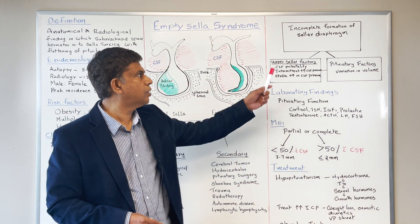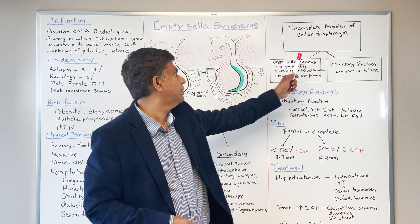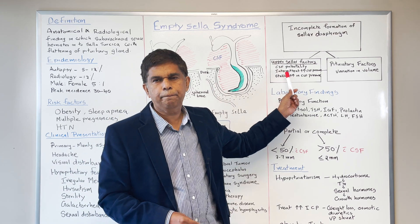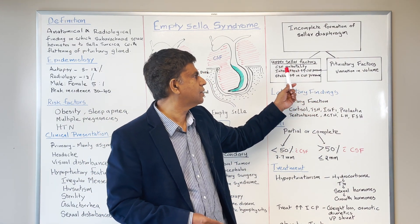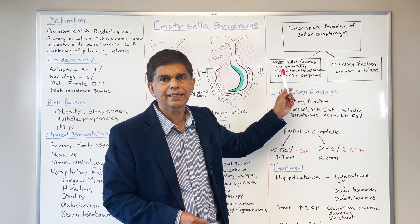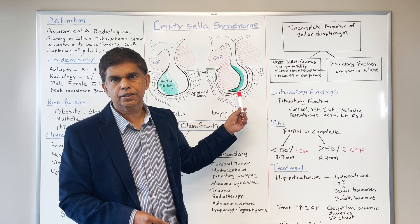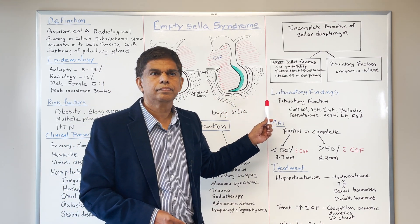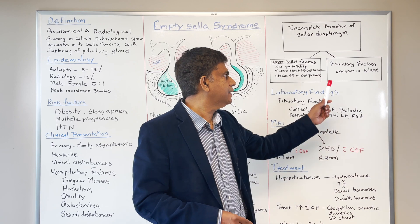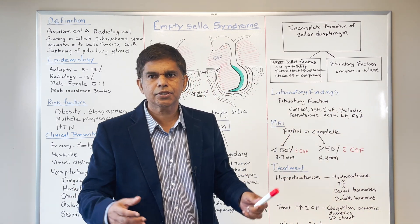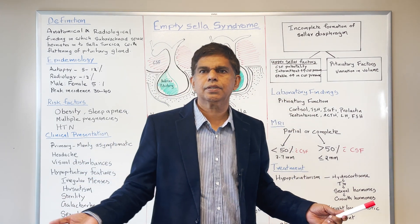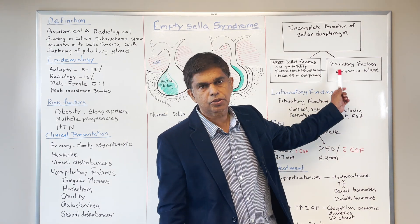Looking at pathophysiology in more detail: we have incomplete formation of the sellar diaphragm, as seen in this picture. Then you have upper sellar factors like increased pulsatility of the CSF and increased CSF pressure, which can cause CSF leaking into the sella turcica region and flattening of the pituitary gland. Pituitary factors include any variation of the pituitary gland — infarction, radiation, or surgery where the pituitary gland is removed — all of which can affect pituitary function.